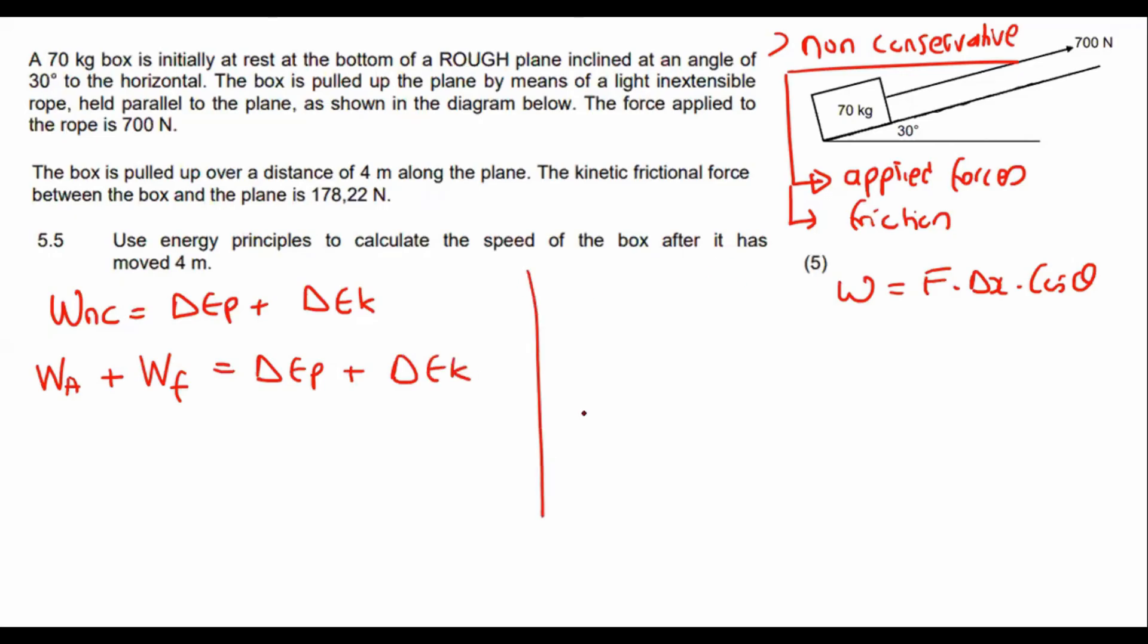I want to quickly show you the difference. You know, when we used W net. Then we had for W net, you put everything. So we had WA plus WG parallel plus W friction equals to delta EK. But now we have taken the gravity away. Can you see we don't have any gravity here? How can we do that? It's simple because we've got a gravity over here with the potential energy. So the formulas are actually very, very similar to each other in a weird kind of way. I hope you can see that.